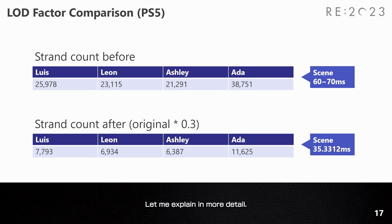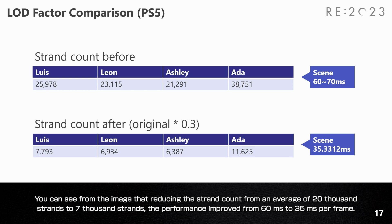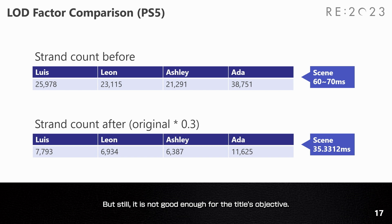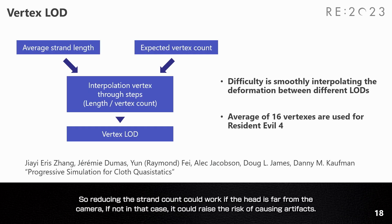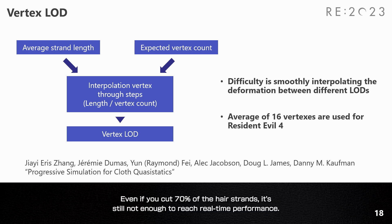Reducing the strand count from an average of 20,000 strands to 7,000 strands improved performance from 16 ms to 35 ms per frame, but it's still not good enough for the title's objective. Humans have about 100,000 hair strands, so if the strand count is reduced too much, strands will either become thinner or border spots will appear. Reducing strand count could work if the head is far from the camera, but otherwise raises the risk of artifacts. Even cutting 70% of hair strands is still not enough to reach real-time performance.